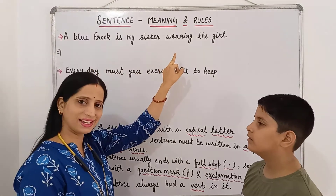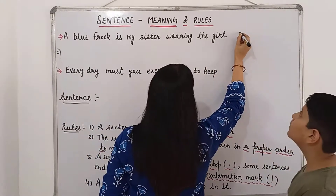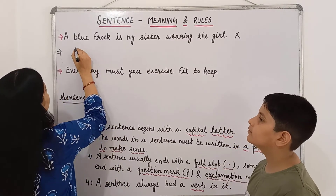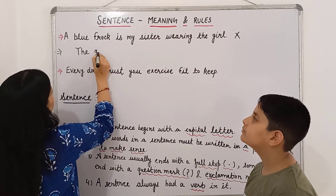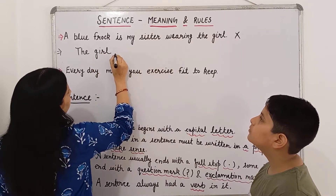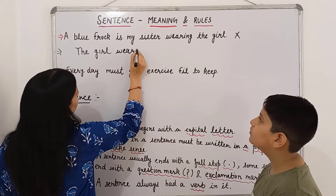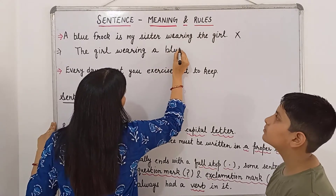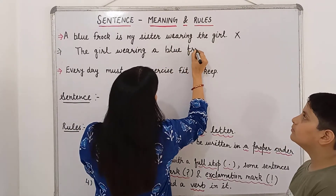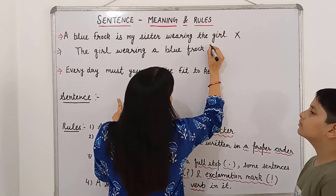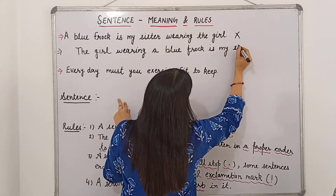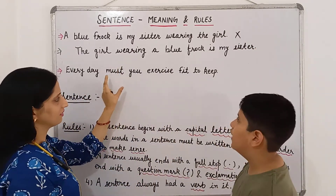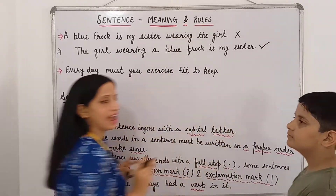Is this group of words making sense? No. So we will arrange these words in a proper order. Now the sentence will be: 'A blue frog is my sister.' Now this is making sense? Yes. So this will be considered as a sentence.